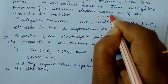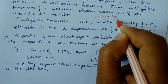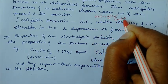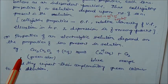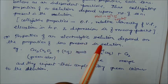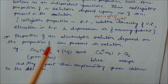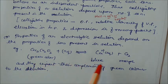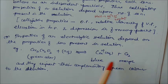For example, NaCl is converted to Na⁺ and Cl⁻ ions — we count two particles, and they are independent of each other. Properties of an electrolytic solution depend upon the properties of the ions present in solution. For instance, a green-colored ion on dissociation gives Cu²⁺ (blue in color) and Cr₂O₇²⁻ (orange in color).